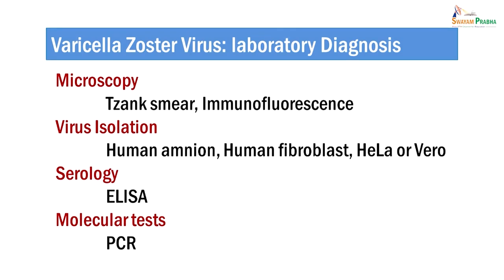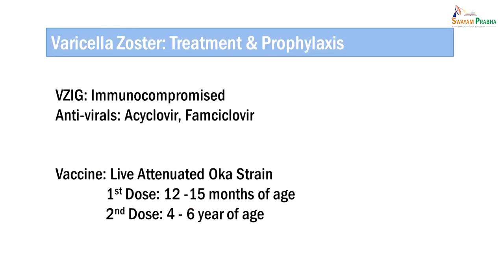For laboratory diagnosis of varicella zoster virus, the approach is the same as for herpes simplex virus: microscopy using Tzanck smear examination, virus isolation using human amnion, human fibroblast, HeLa, or Vero cell culture, serology using ELISA for antibody demonstration, and molecular testing using polymerase chain reaction. Treatment is given as varicella zoster immunoglobulin for immunocompromised persons. For immunocompetent persons, antiviral drugs like acyclovir and famciclovir can be used. A vaccine is available in the form of live attenuated Oka strain vaccine. Two doses are given: the first at 12 to 15 months of age and the second at 4 to 6 years of age.